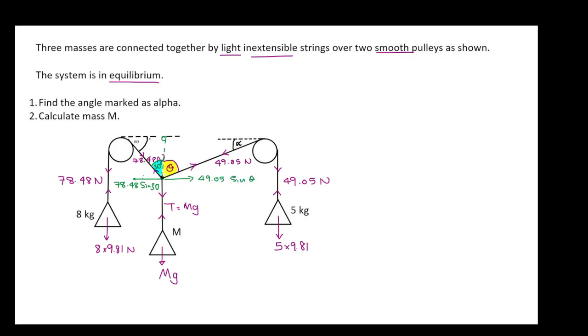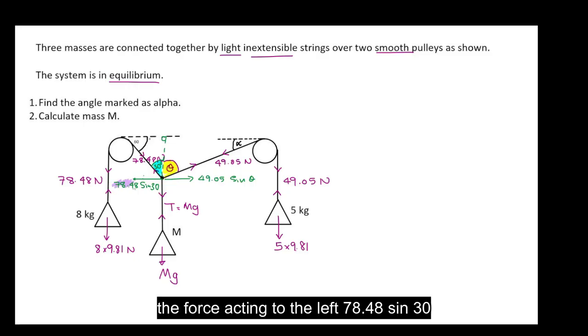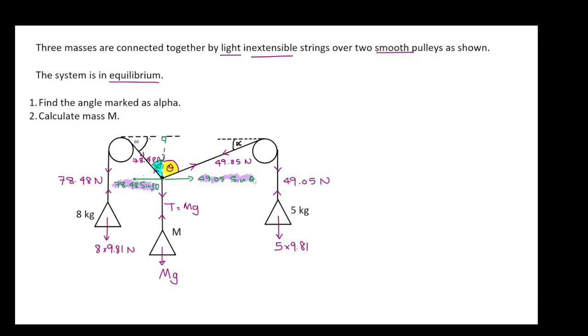Now this object is in equilibrium. So the force acting to the left 78.48 sine 30 and 49.05 sine theta must be the same.